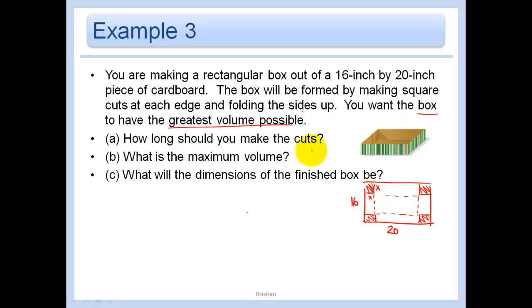How long should you make the cuts? Well, let's think about it. This whole side was 20. So what's this dotted side length? Well, this was x, and this was x. So this is just 20 minus 2x. This whole side length was 16. And so how long is this dotted side? Well, let's see. This was x, and this is x. So this dotted side length here is just 16 minus 2x.